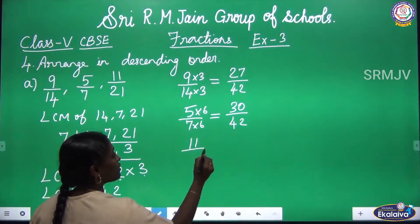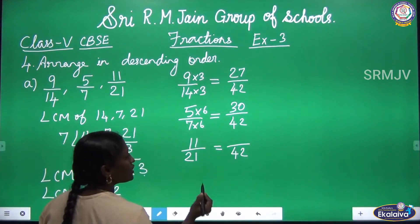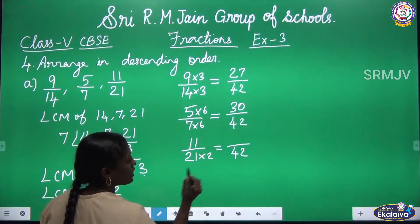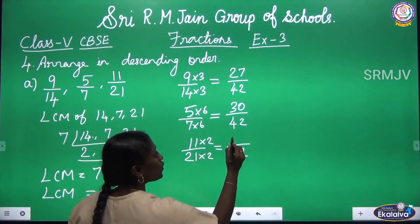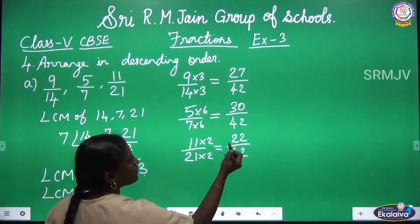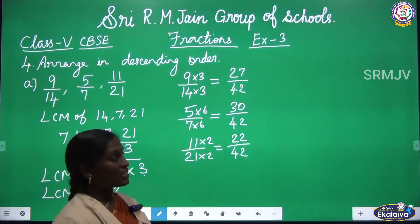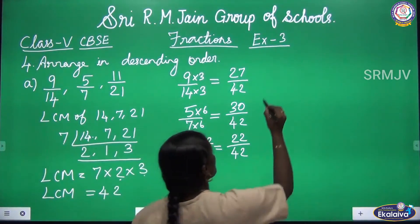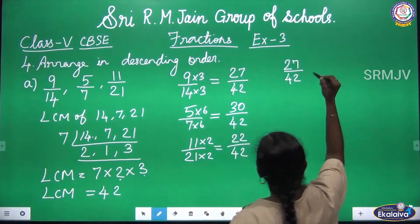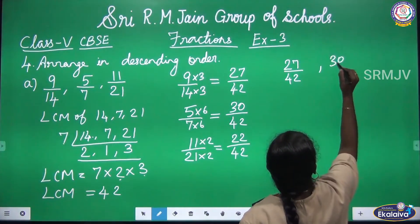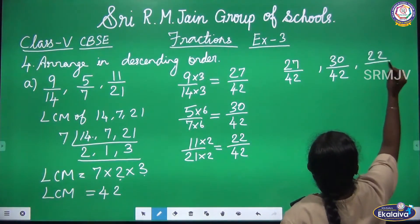The third fraction is 11 by 21. In the 21 table, 21 twos give 42, so we multiply the numerator by 2. 11 into 2 is 22. Now we have got the fractions with the same denominator 42 — these are like fractions. We compare them: 27 by 42, 30 by 42, and 22 by 42.